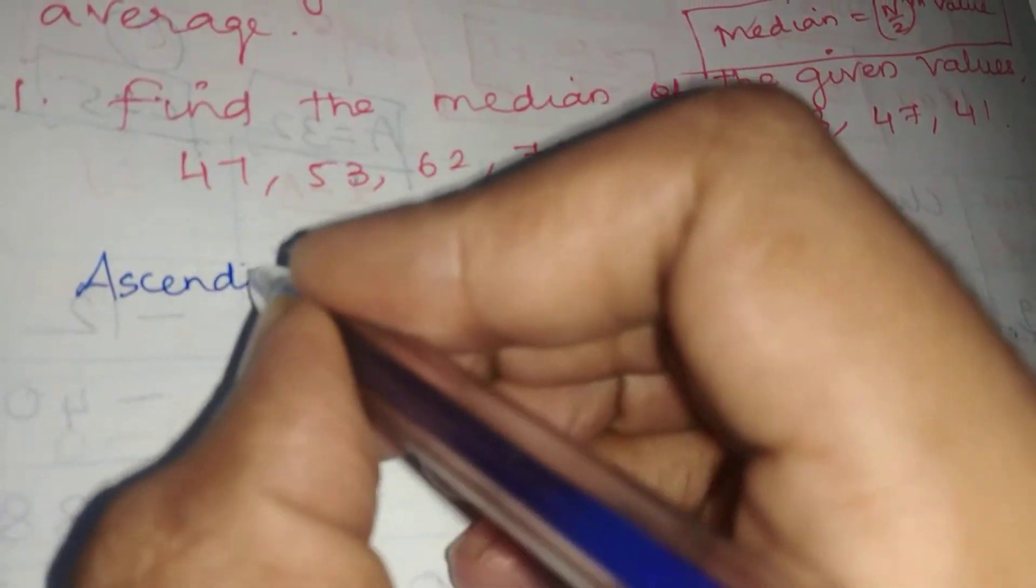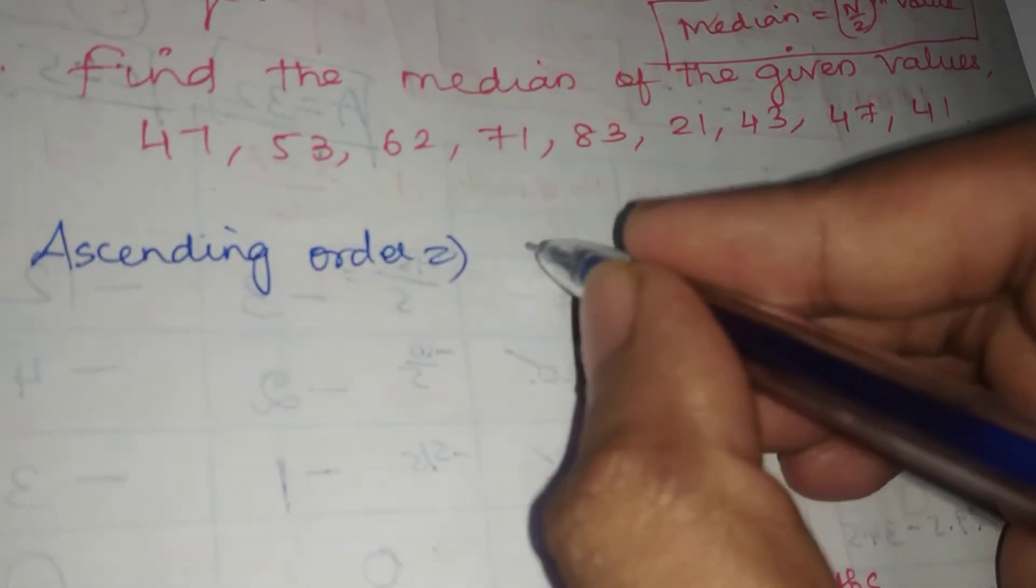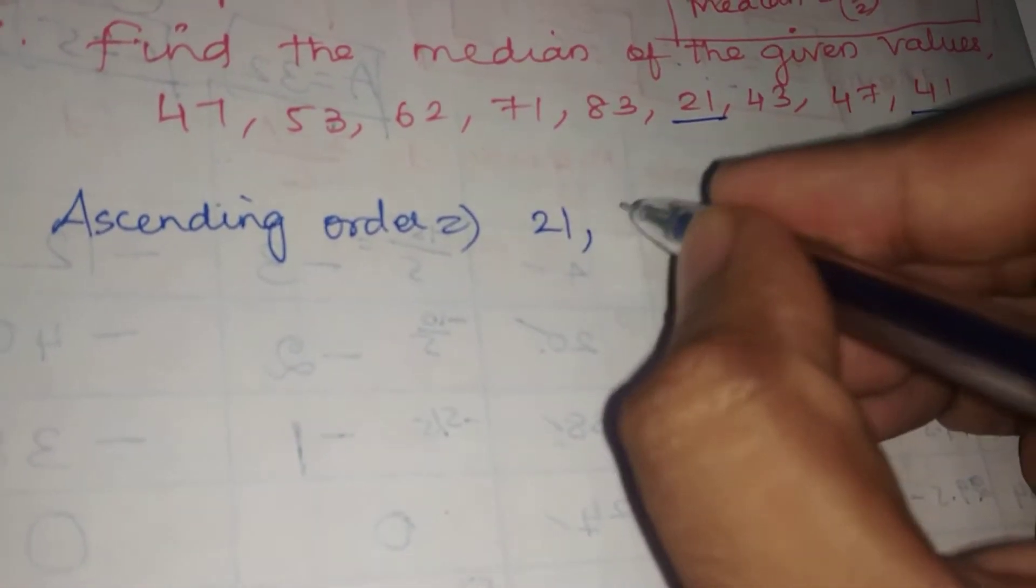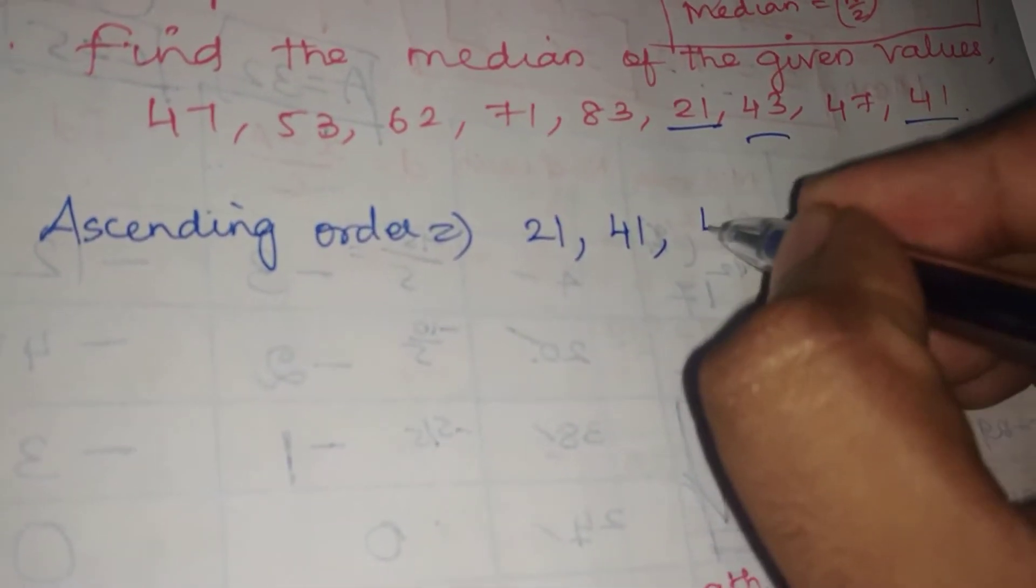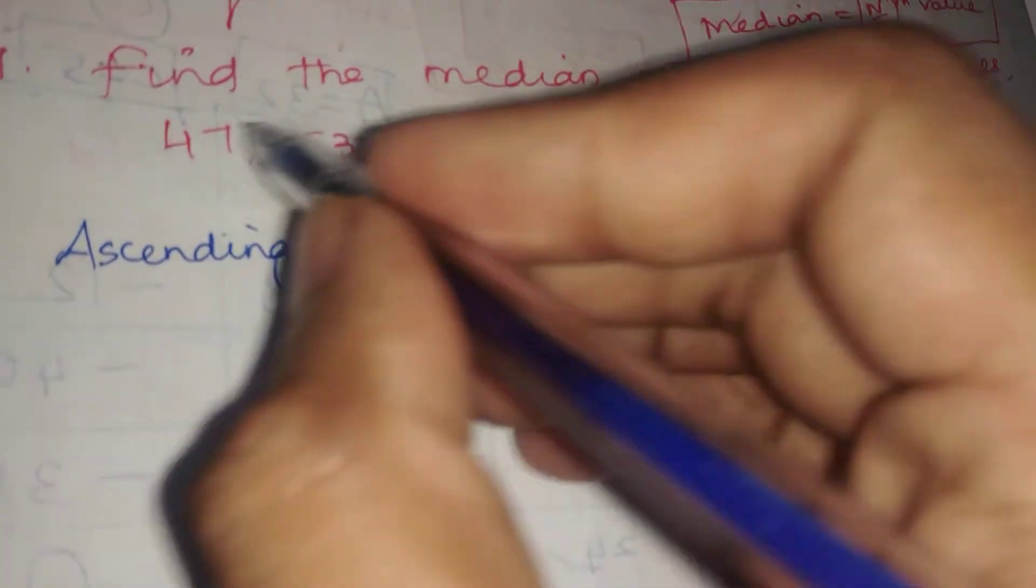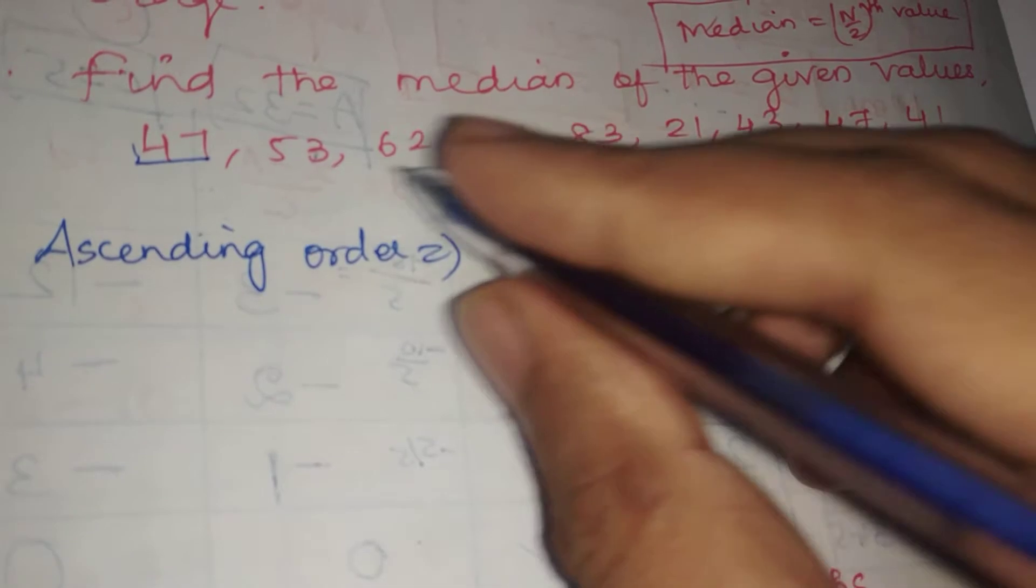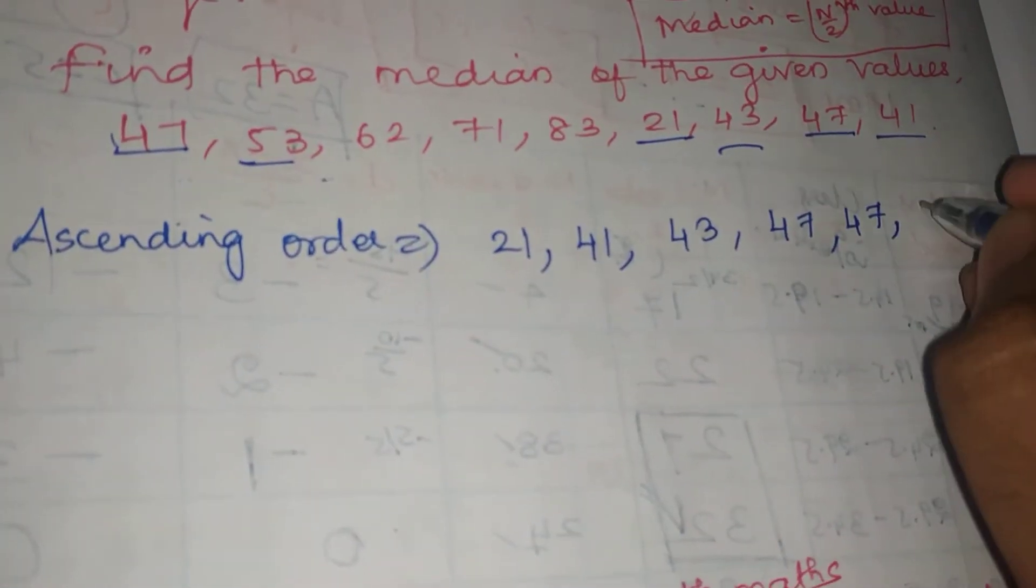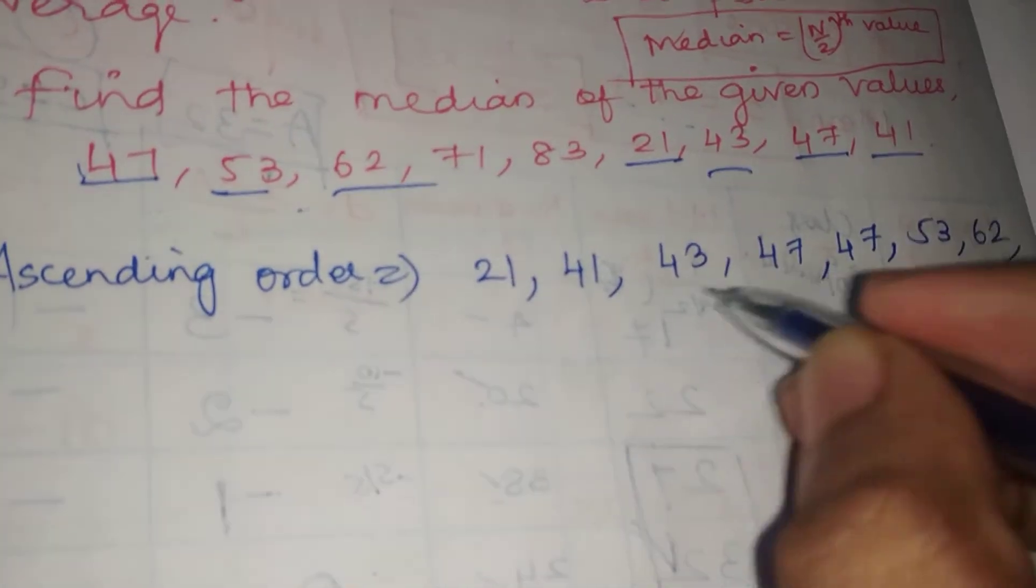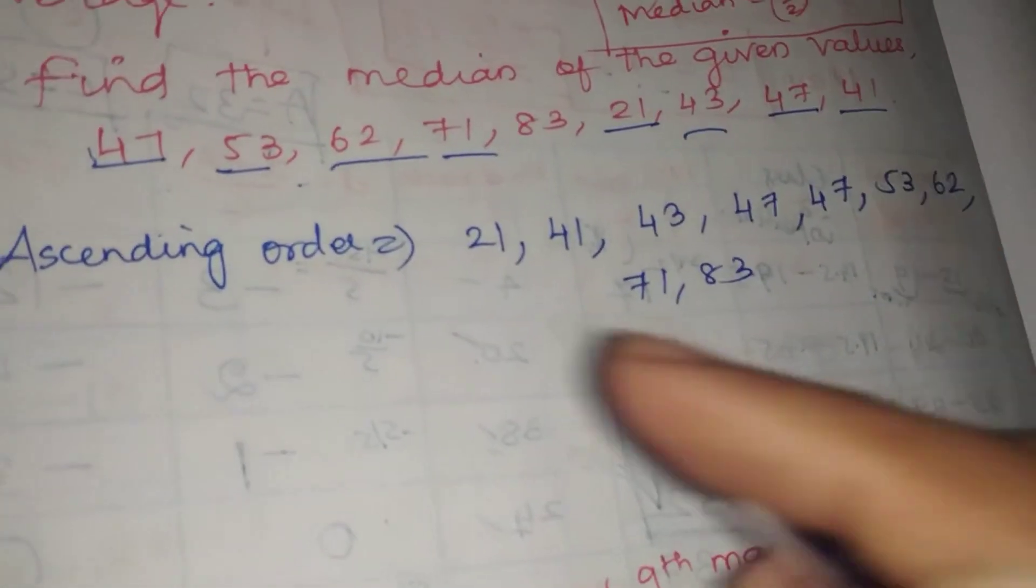Arranging in ascending order: 21, 41, 43, 47, 47, 53, 62, 71, 82. You have to count the values.